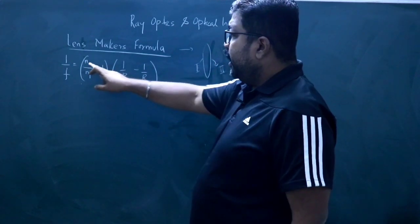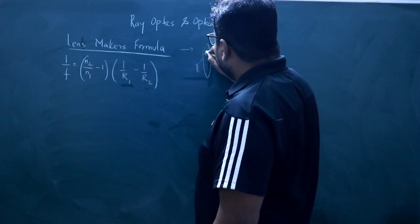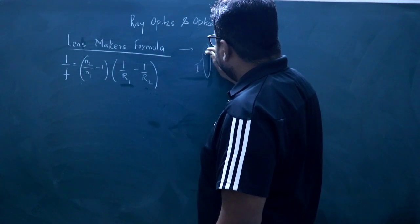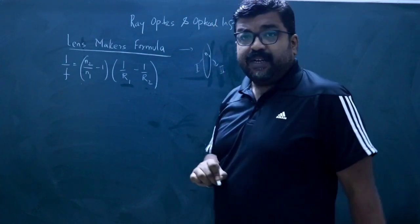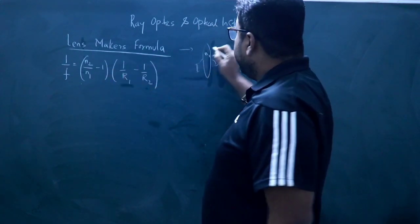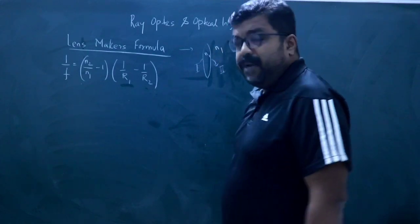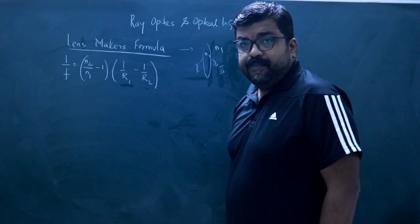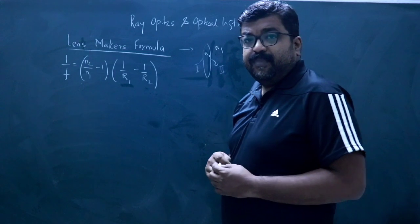N2 is the refractive index of the lens and N1 is the refractive index of the medium. F is the focal length of the lens.